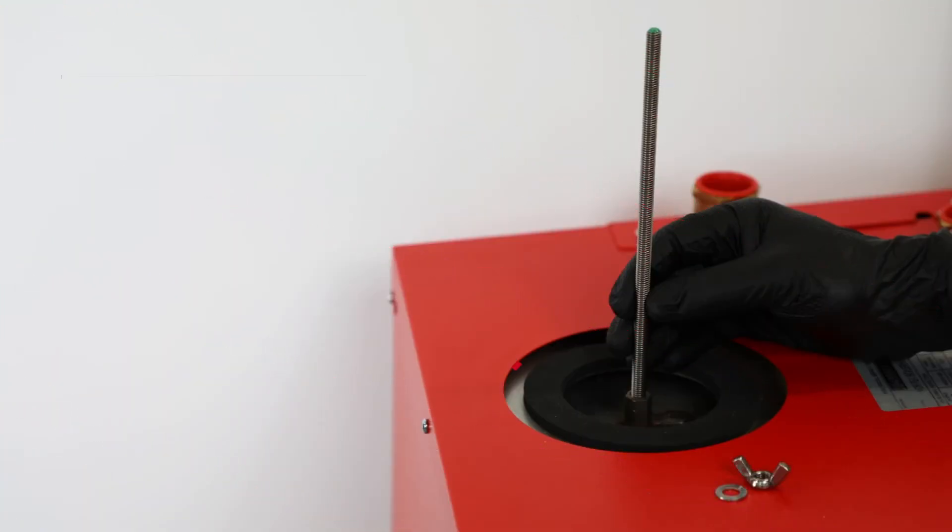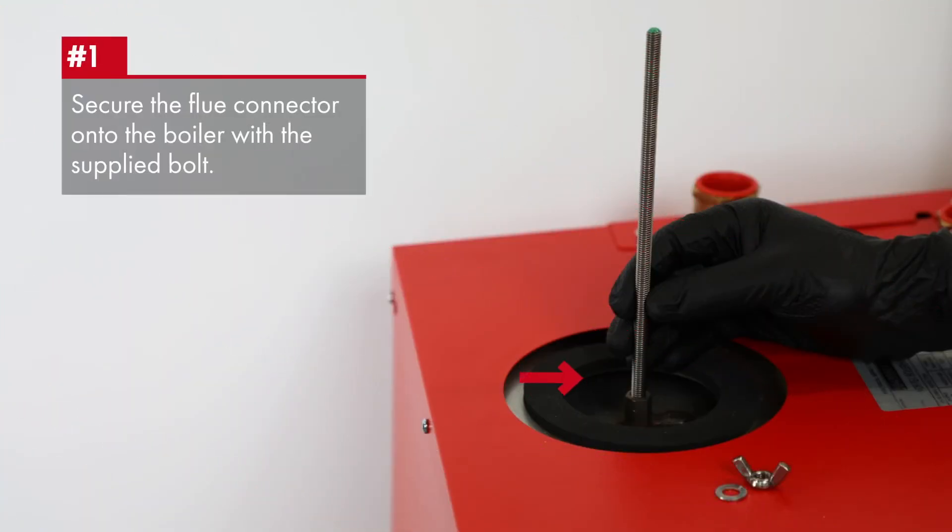The white boiler connector is secured onto the boiler using the threaded bar to give a good seal on the black neoprene gasket.